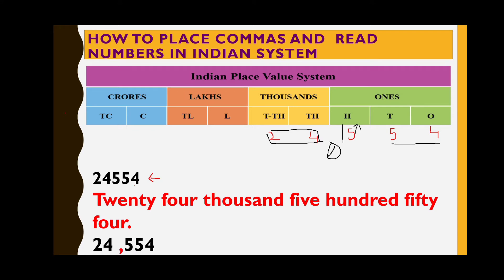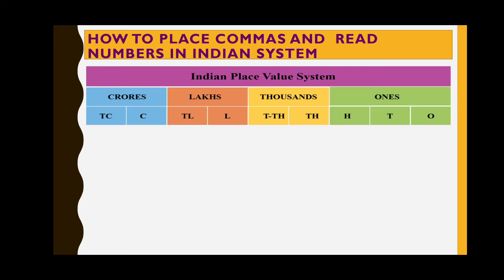In the Indian system, commas are placed after the first three places from the right for the thousands period, then after the next two digits for the lakhs period, and then for the crores period. Let us see one more example. We start writing the number according to its places from the right — ones place first — so six goes in ones place, three in tens place, and five in hundreds place.